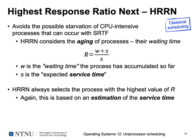Highest Response Ratio Next (HRN) addresses the starvation problem by considering the aging of processes. It computes R = (waiting time + expected service time) / service time, and always selects the process with the highest value of R. This considers both the waiting time accumulated so far and the expected service time. Again, because we don't know actual service times, we must apply an estimation.